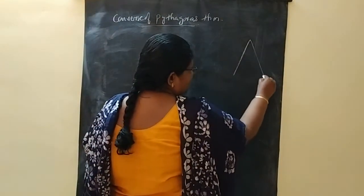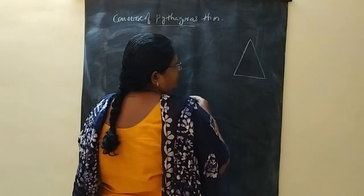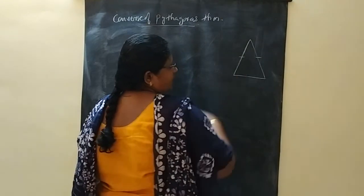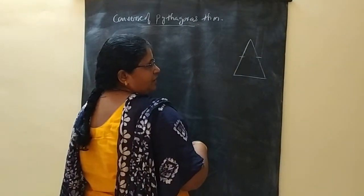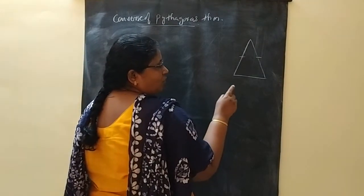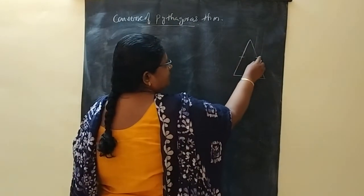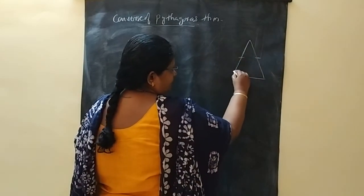In an Isosceles Triangle—isosceles means two sides equal—the angles opposite to the equal sides are equal. So these are the equal sides.